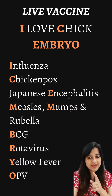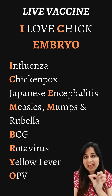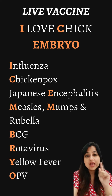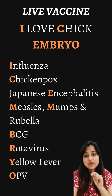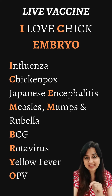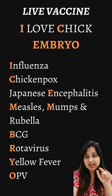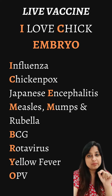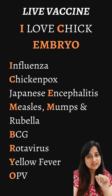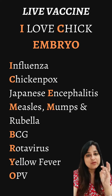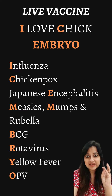The mnemonic for live vaccines is 'I LOVE CHICK EMBRYO.' I stands for influenza (live nasal), L stands for live vaccine, C stands for chickenpox, and E stands for Japanese encephalitis live vaccine.